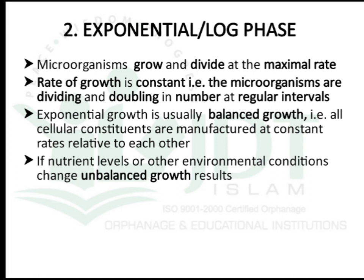The second phase is the exponential or log phase. There is growth and division at a maximal constant rate, with microorganisms doubling in number at regular intervals. Exponential growth is usually balanced because there are sufficient nutrients and less metabolic end products. If anything happens to nutrient levels or environmental conditions like temperature, it leads to unbalanced growth. Maximum cell division and increase in cell numbers occurs in this phase.